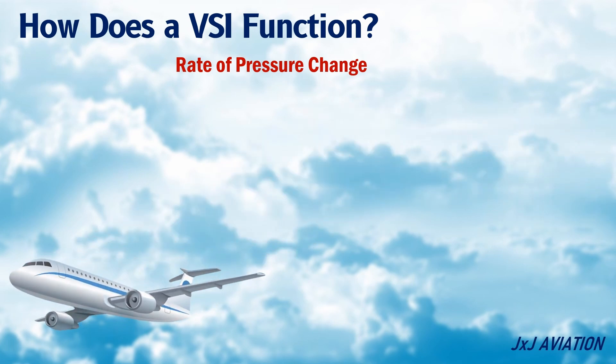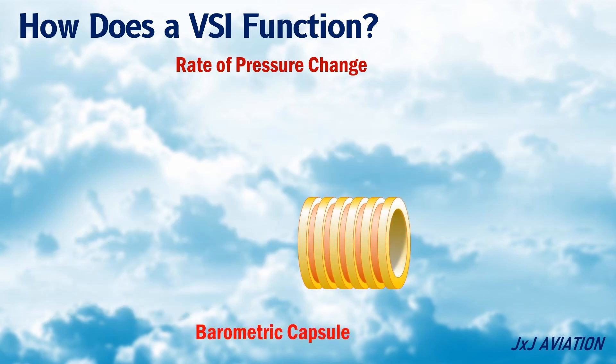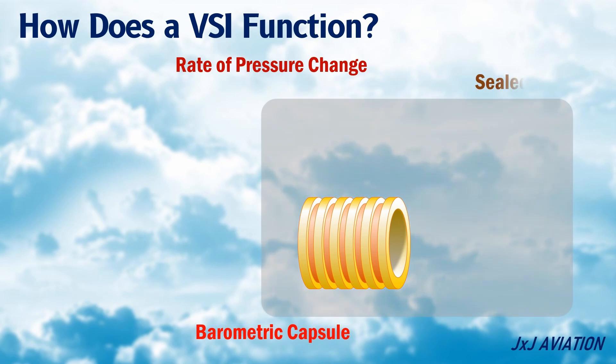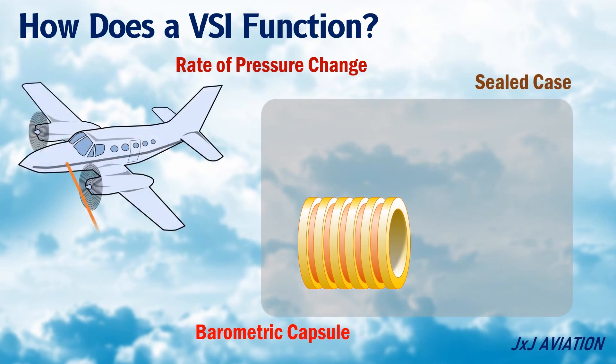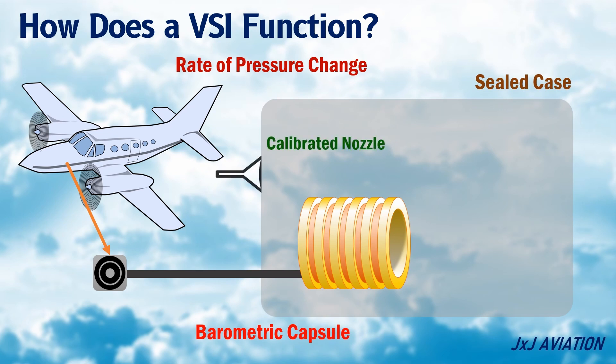The instrument consists of a barometric capsule inside a sealed case. This capsule is connected to the static port located on the skin of the aircraft. The case is also connected to the static port through a calibrated nozzle, which restricts the flow of air into or out of the capsule.